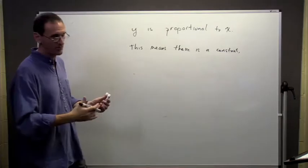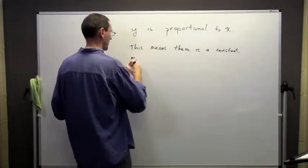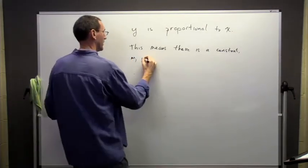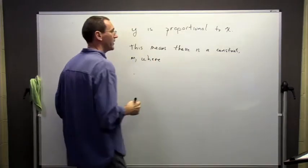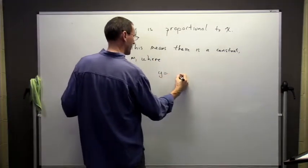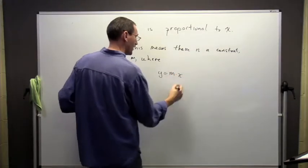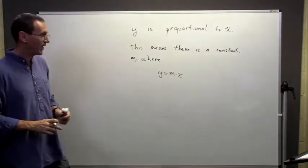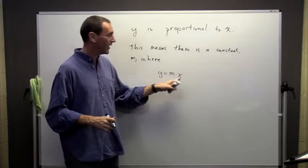It means there's some constant. For now, we'll just call it m for lack of a better name. And what's special about these three things is that the first thing is related to the x in this way. We say that y is equal to m times x.